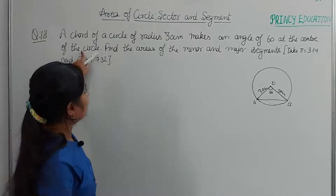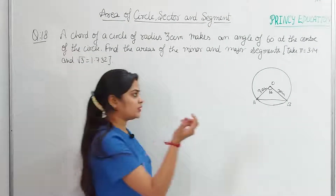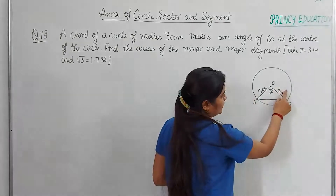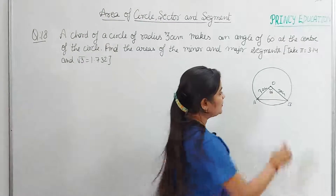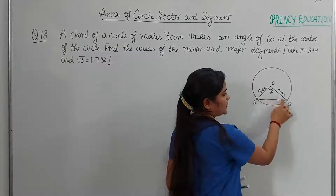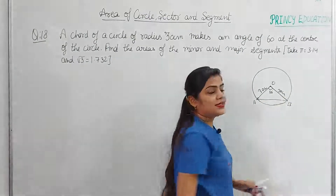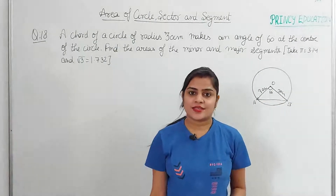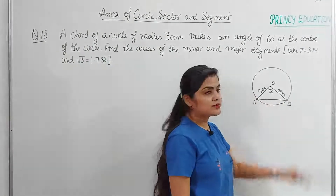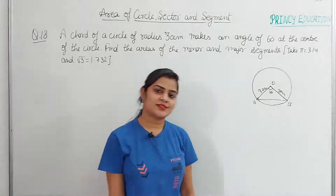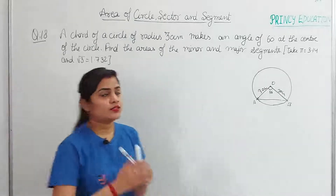Since the central angle is 60°, the remaining angles in triangle OAB each equal 60°, making it an equilateral triangle. This means AB = OA = OB = 30 cm. So this is an equilateral triangle, and if you are asked for AB its value would be 30 cm.